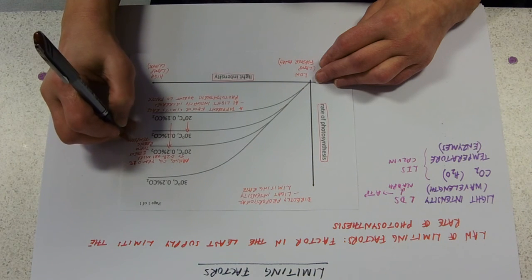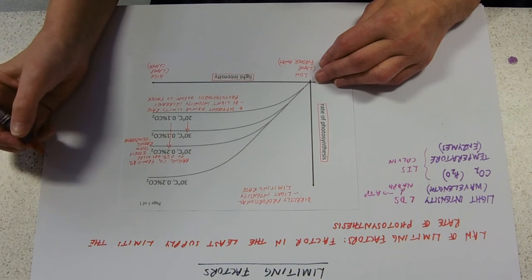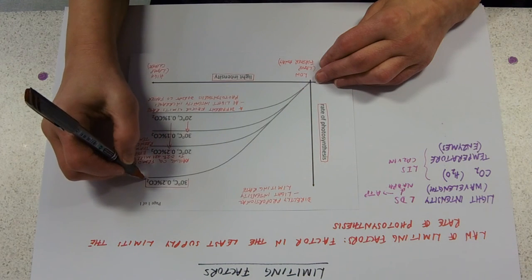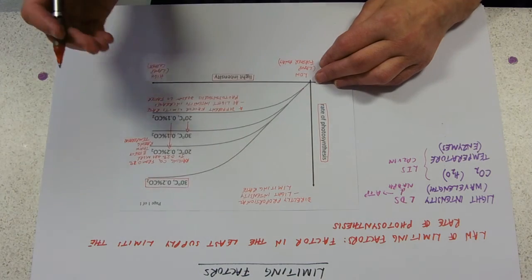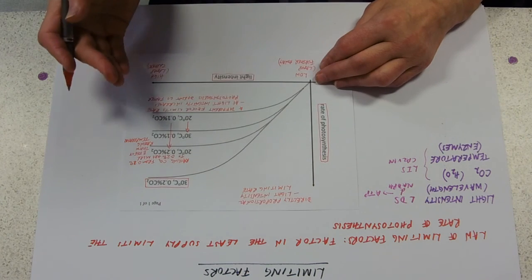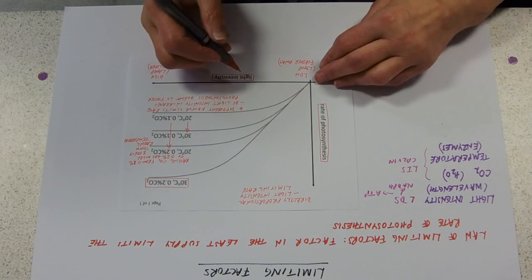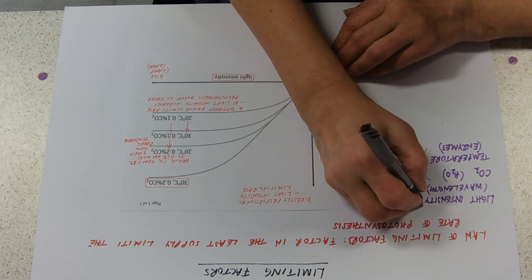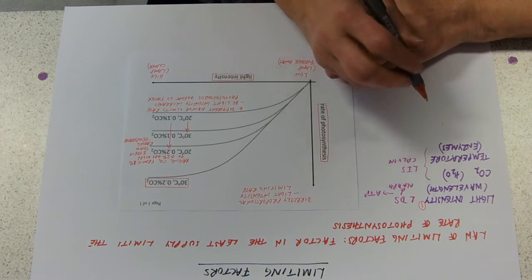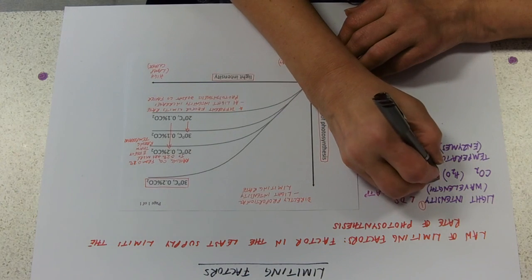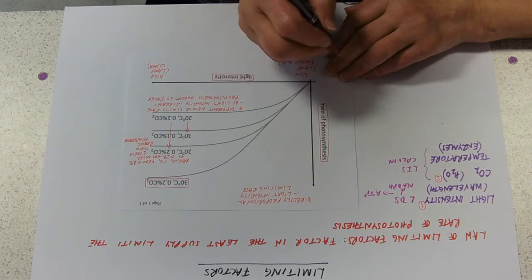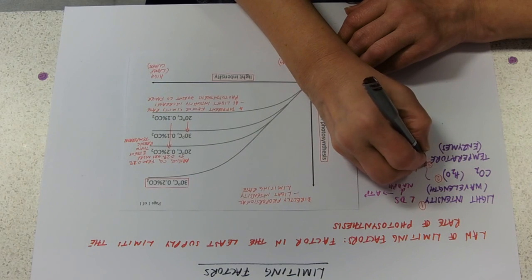And then of course, if we raise both of the factors, that has an even bigger effect. So if we raise both temperature and carbon dioxide, that has the biggest effect of all. This gives us an order of how important those limiting factors are. Our first limiting factor is light intensity - that's the one that's going to limit it most if it's not in enough supply. Then carbon dioxide, because raising carbon dioxide level has a much bigger effect than temperature. And lastly, temperature.